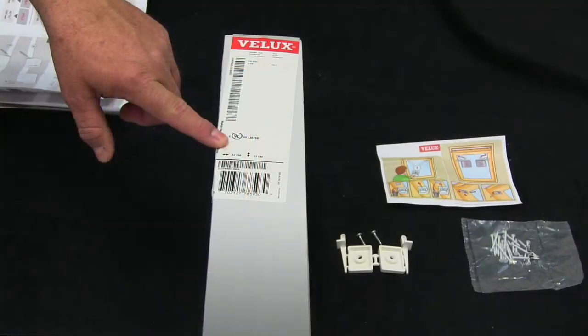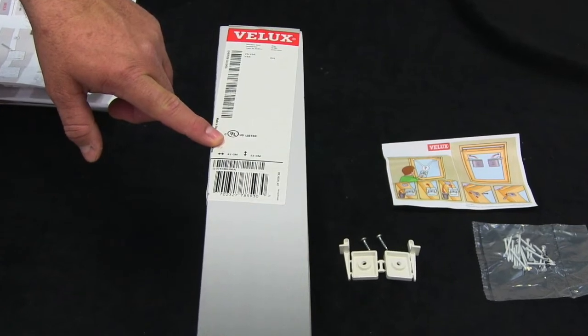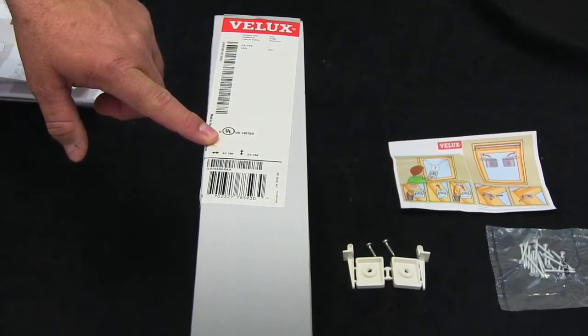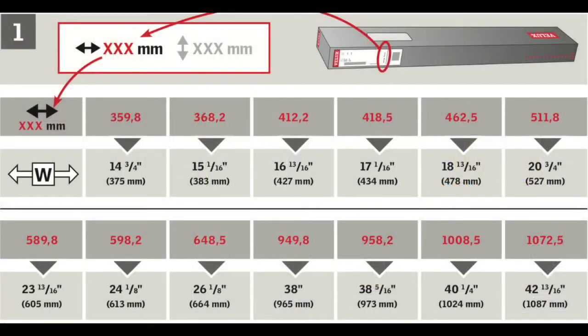For the first step, you will want to obtain the width shown in millimeters on the label of your blind packaging. This can be cross-referenced against the chart to verify the correct cut for the top and bottom frame widths. For instance, our blind package has a width of 418.5 millimeters, which translates to 17 1/16 inches.